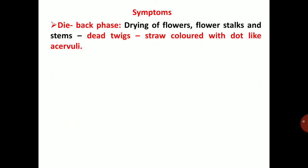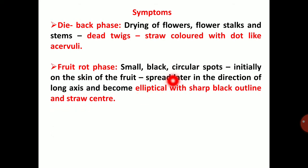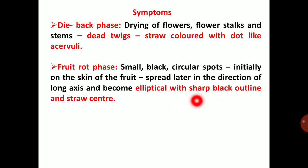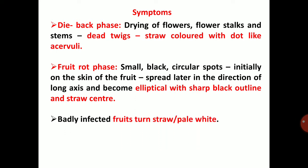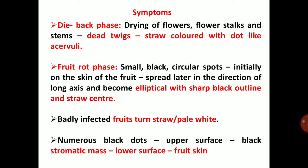Symptoms of chili fruit rot: Dieback phase — drying of flowers, flower stalks, and stem; dead twigs are straw colored with dot-like acervuli. Fruit rot phase — small black circular spots initially on skin of fruit spread later in the direction of the long axis, becoming elliptical with sharp black outline and straw center. Badly infected fruits turn straw or pale white color, with numerous black dots on upper surface, which resembles the black stromatic mass, that is acervuli.